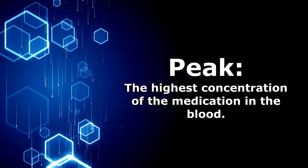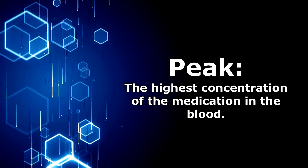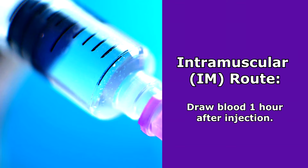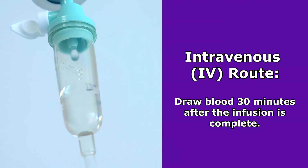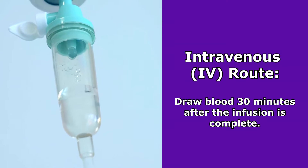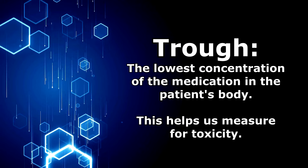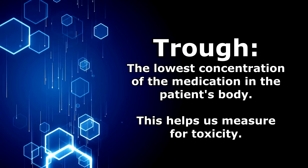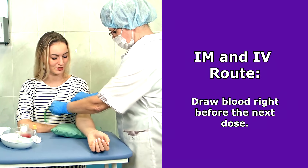The peak is the highest concentration of the medication in the blood. If your patient is getting it IM, you would do a blood draw for the peak one hour after the injection. If the patient is getting it IV — typically a 30-minute infusion — you would do a blood draw about 30 minutes after the infusion has been completed. The trough is the lowest concentration of the medication in the patient's system, and we monitor this to watch for toxicity. For IM or IV, you collect it right before the next dose.